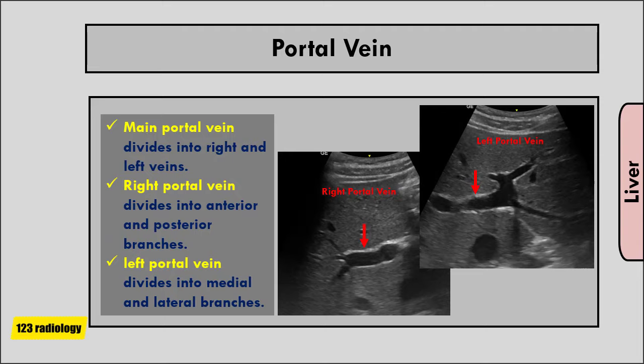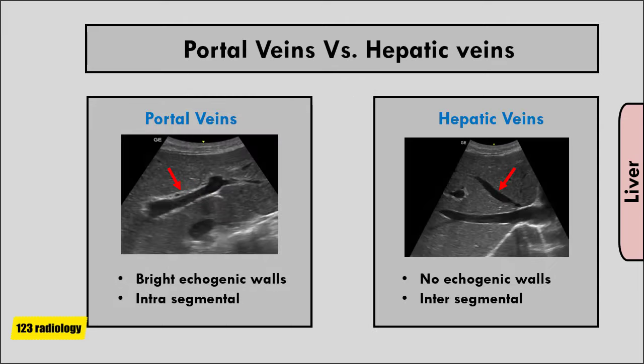The right portal vein divides into anterior and posterior branches. The left portal vein divides into medial and lateral branches. The left portal vein is in contact with the ligamentum teres. The portal veins can be differentiated sonographically from the hepatic veins by the bright echogenic walls that surround them. This is due to thick collagenous tissue in the portal vein walls, whereas the hepatic veins do not exhibit echogenic borders.